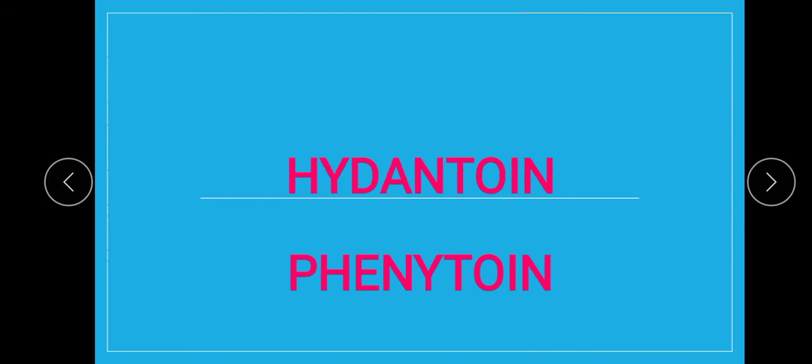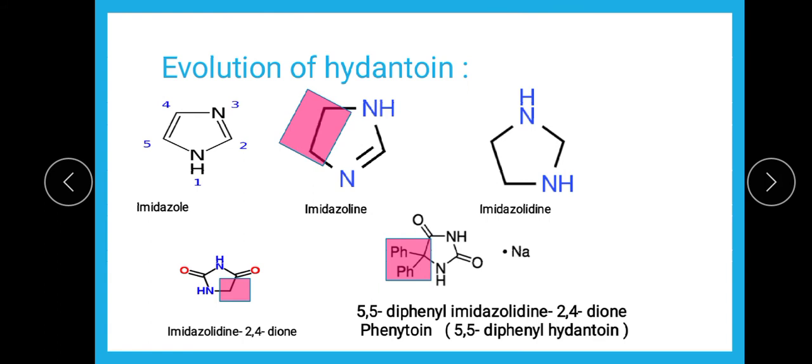To start with phenytoin, we will first cover the structure and its IUPAC name. Along with the structure and IUPAC, we are going to talk about its properties, uses, official preparations, and brand names. To start with the phenytoin structure, first we have to understand what hydantoin is, because phenytoin belongs to the class hydantoin.